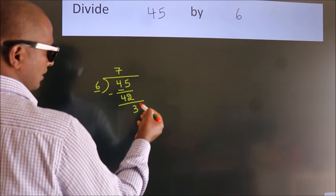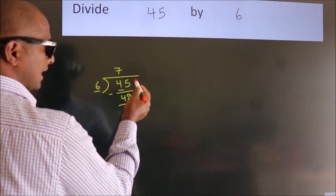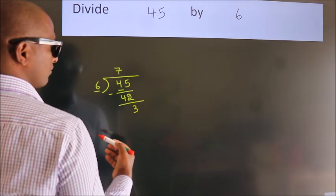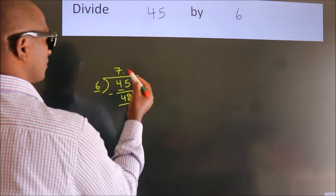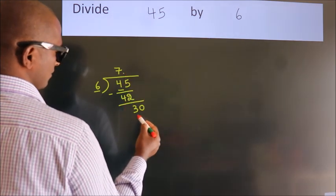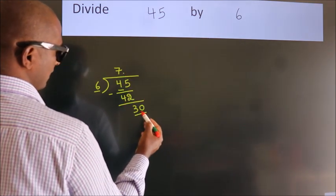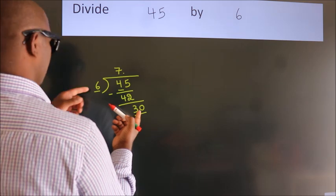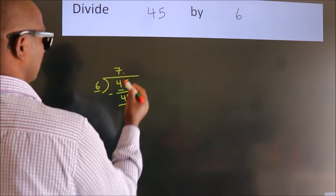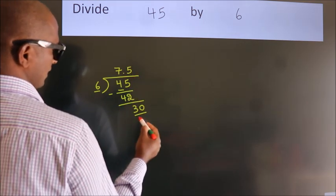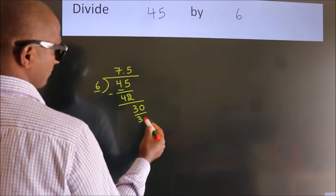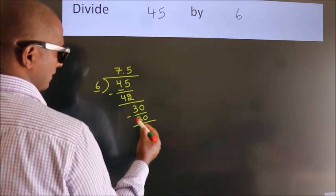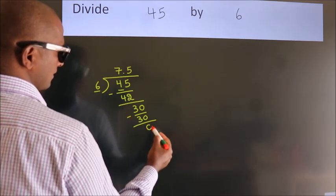After this, there are no more numbers to bring down. So what we do is, we put a dot and take 0. So 30. When do we get 30 in the 6 table? 6 fives 30. Now we subtract. We get 0.